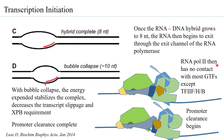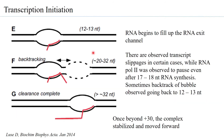RNA pol 2 then has no contact with most GTFs except TF2F, and TF2H not necessarily either. When the RNA is synthesized to about 12 to 13 nucleotides, it has begun to fill up the RNA exit channel.